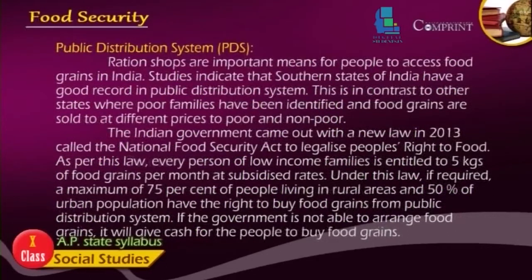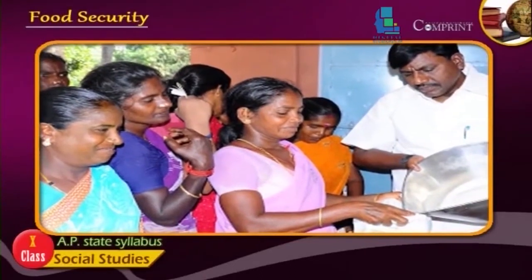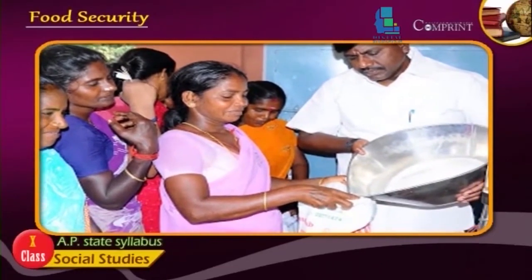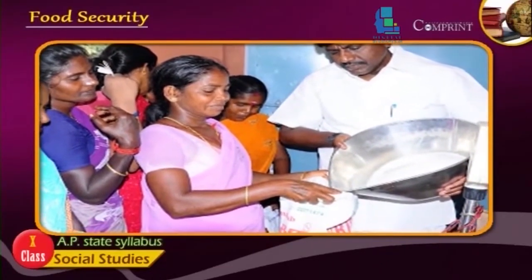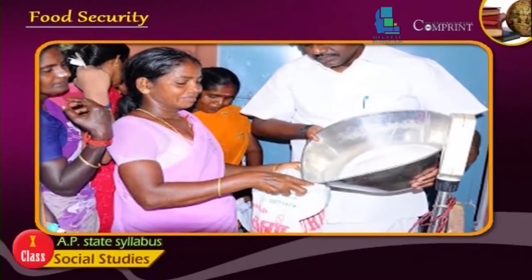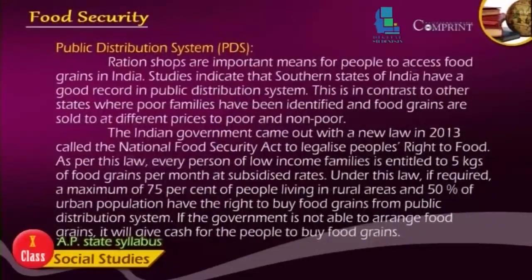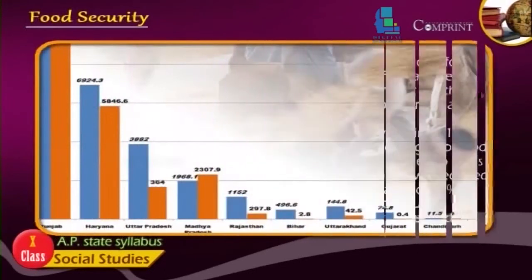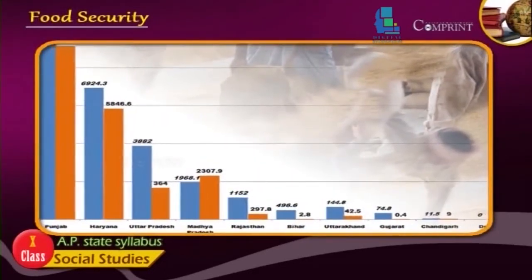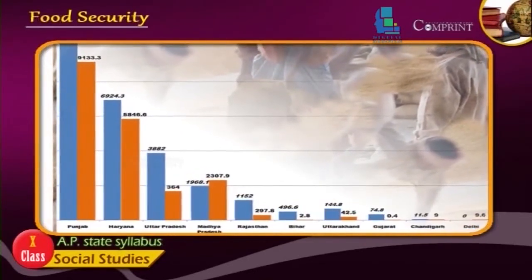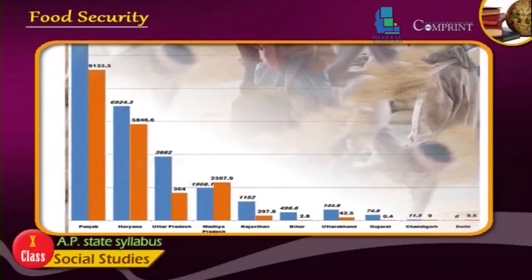Public Distribution System (PDS) ration shops are important means for people to access food grains in India. Studies indicate that the southern states of India have a good record in public distribution. In contrast, other states have identified poor families and sell food grains at different prices to poor and non-poor households.